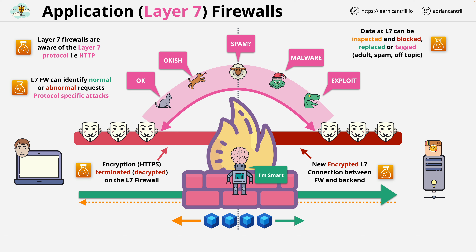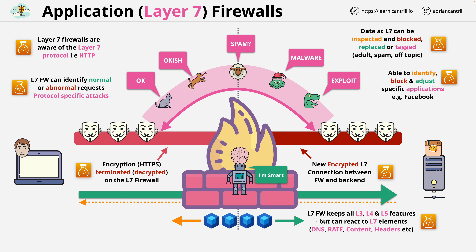You can even replace content — if adult images flow through, they can be replaced with a kitten picture or other baby animals. You can block specific applications such as Facebook, and even block the flow of business data leaving the organisation onto services such as Dropbox. The key thing is that a layer 7 firewall keeps all of the layer 3, 4, and 5 features but can also react to layer 7 elements — things like DNS names, the rate of flow such as connections per second, content, or headers — whatever elements are contained in that specific layer 7 protocol.